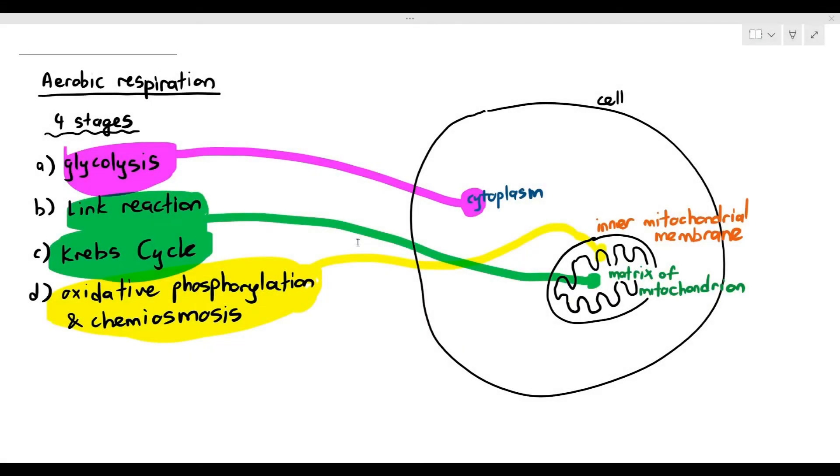In the previous video when we were covering aerobic respiration, I told you that the link reaction, Krebs cycle, and oxidative phosphorylation together with chemiosmosis happen in the mitochondrion.